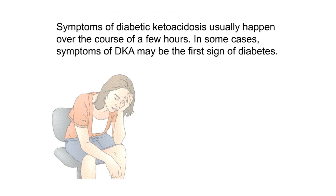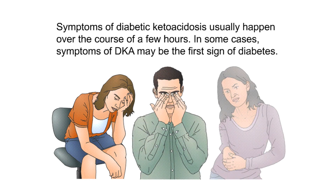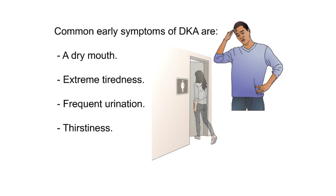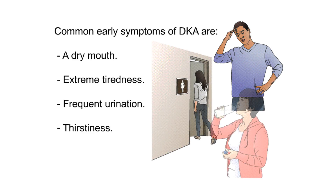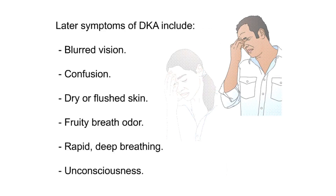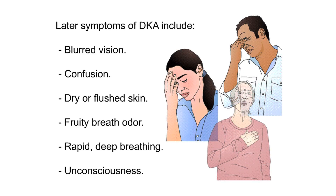Symptoms. Symptoms of diabetic ketoacidosis usually happen over the course of a few hours. In some cases, symptoms of DKA may be the first sign of diabetes. Common early symptoms of DKA include a dry mouth, extreme tiredness, frequent urination, and thirstiness. Later symptoms include blurred vision, confusion, dry or flushed skin, fruity breath odor, rapid deep breathing, and unconsciousness.